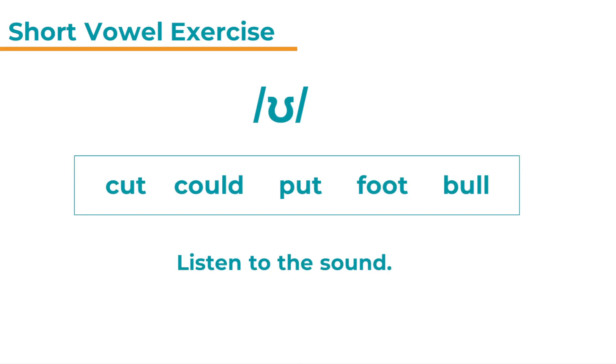Next sound. Listen to the sound. Read the words out loud and listen carefully. Which word has a different sound? Listen and check. Cut. Could. Put. Foot. Bull. And the answer is cut.